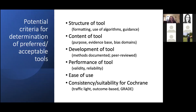The next step is to survey the membership of the Bias Methods Group, the NRSI working group, and the NRSI GRADE working group to gather opinion about what characteristics make tools acceptable for use in Cochrane reviews, and then what might be the preferred standard for tools.